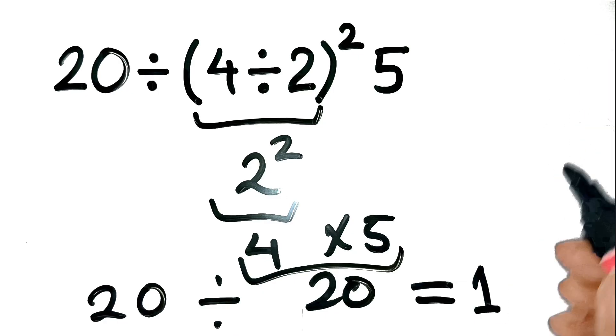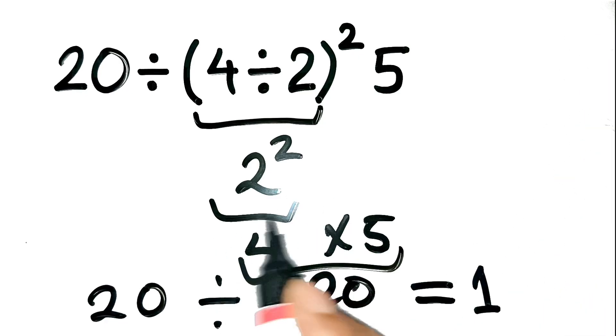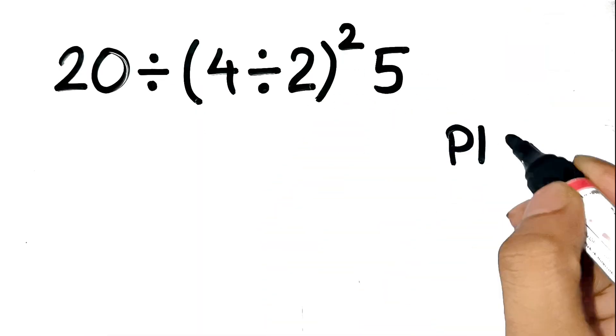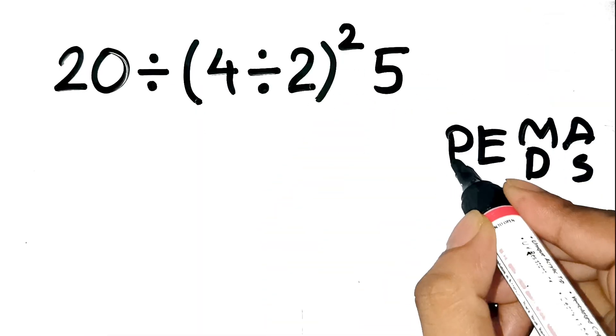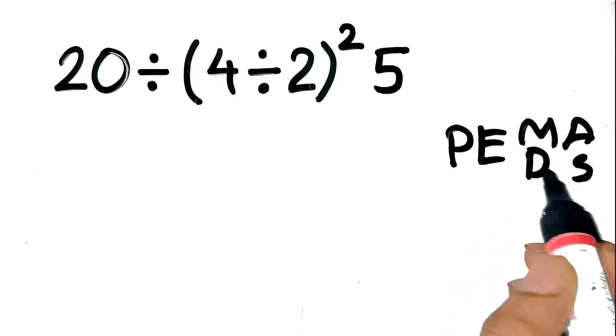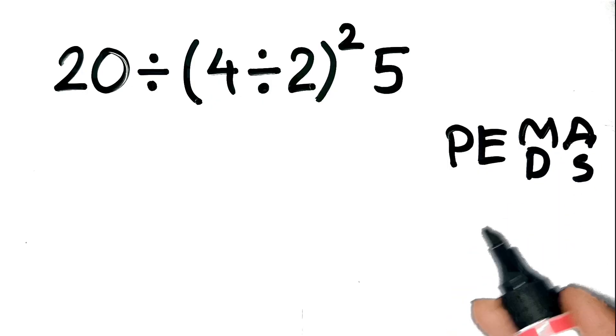Seems logical, but that's where the mistake hides. Let's slow it down and go step by step using PEMDAS, which stands for parentheses, exponents, multiplication, division, addition, and subtraction.